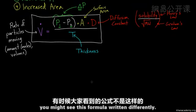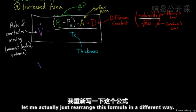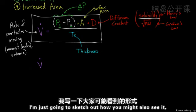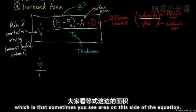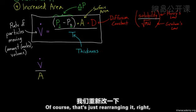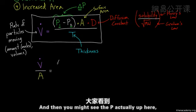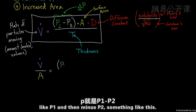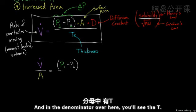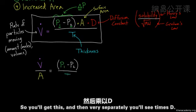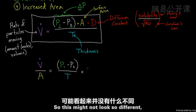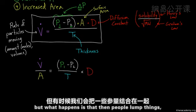And sometimes, as I mentioned, you might see this formula written differently. In fact, let me actually just rearrange this formula in a different way. Sometimes you see area on this side of the equation. Of course, that's just rearranging it, dividing both sides by area. And then you might see the P actually up here, like P1 and then minus P2, something like this. And in the denominator over here, you'll see the T. And then very separately, you'll see times D. So this might not look so different. But what happens is that then people lump things.